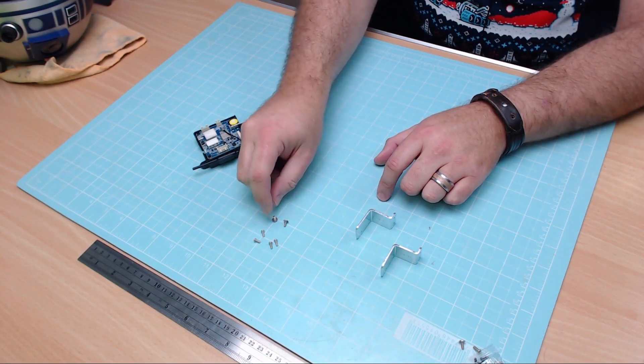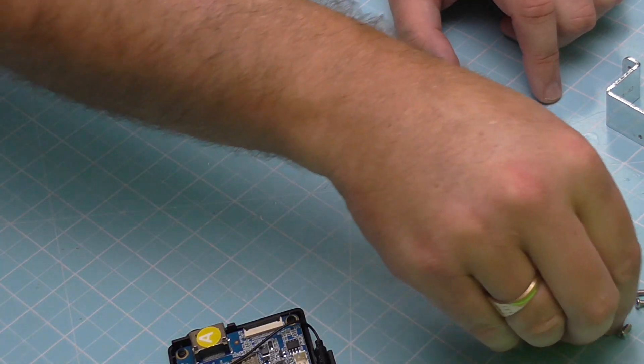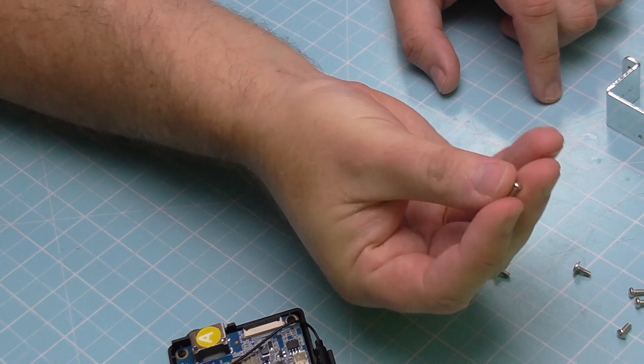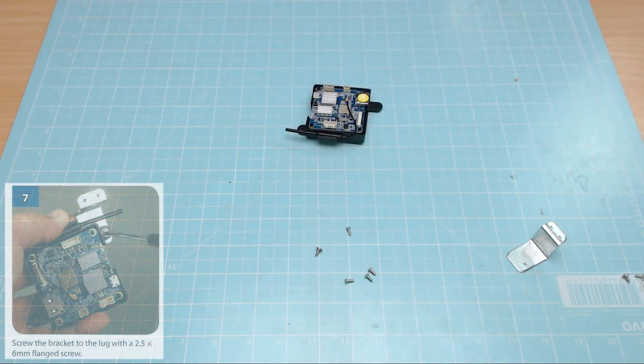We're going to need some screws and the screws we need, two six mil flange screws. That's the ones with the flange on the top, just looking like that. And we're just going to need four of exactly the same size, but without the flange, looking like that.